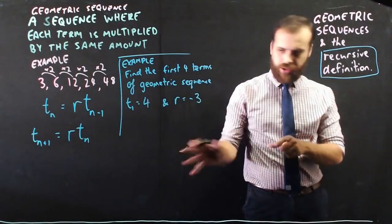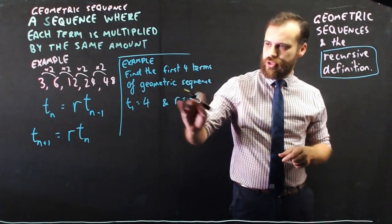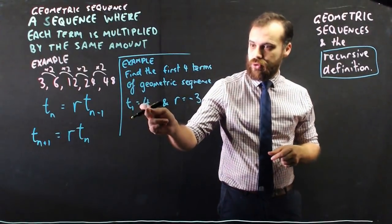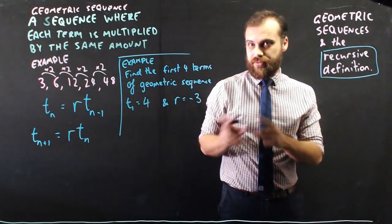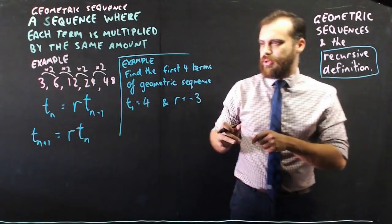Quick example. Find the first four terms of a geometric sequence if the first term is 4 and the common ratio is negative 3. I've chosen a bit of a tricky one here but let's try it out.